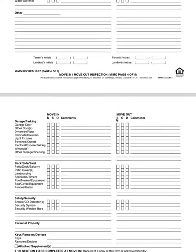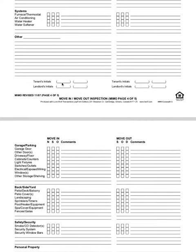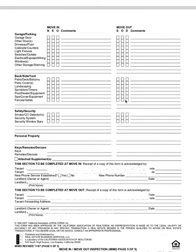At the bottom of each page, you're going to initial on the left side, and we're going to initial on the left side as well. Then on move-out, you're going to initial on the right side, and the landlord is going to initial on the right side as well.